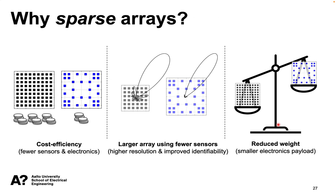For the same aperture, a sparse array can achieve the same resolution and identify as many targets as a uniform array, but using much fewer physical sensors and hence reduced costs. On the other hand, for the same number of sensors, you could build a larger physical aperture and hence improve resolution and the number of identifiable sources or targets. Whereas a uniform array could identify up to n targets using n sensors, a sparse array could identify up to n-squared targets using n sensors due to the larger aperture. In between these two extremes, you can do more using less — improving performance with fewer resources.